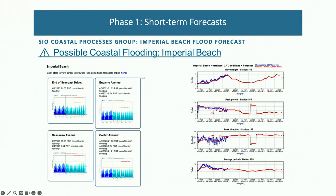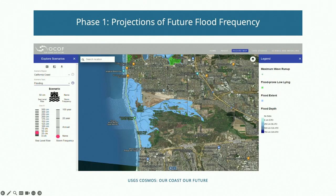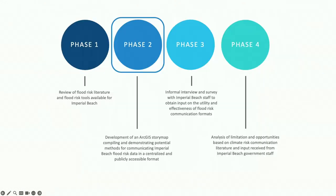To understand communication of present threats, Scripps has developed a flood forecast system in Imperial Beach. This tool allows users to identify when minor and moderate flood thresholds are breached, providing forecasts about five days ahead of time via email and an online tool. For future flood vulnerability, many projection tools are available, though none present information specifically relevant to Imperial Beach or consolidate it in a way that is widely accessible.